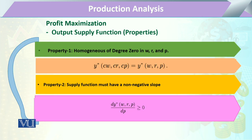The first property — homogeneous of degree 0 — means that the output supply function y depends on input prices and output prices. If there is any change in prices by any factor t or c, multiplying all prices by that factor will have a total net effect of 0 on output. This means inflation has a neutral effect on output supply if it affects all input and output price levels in the same manner.